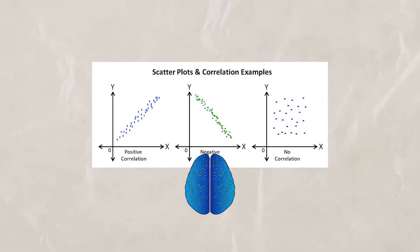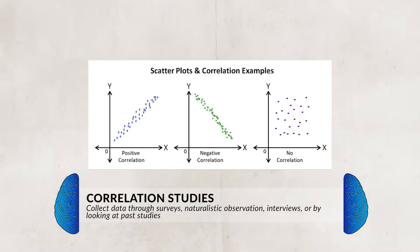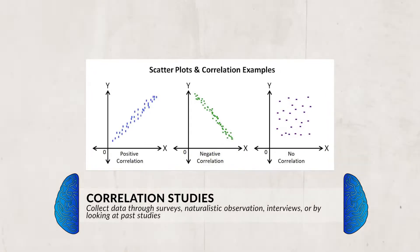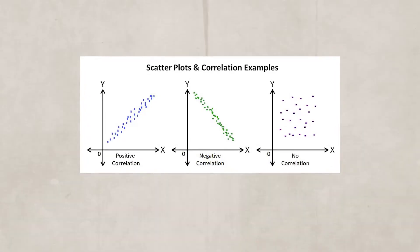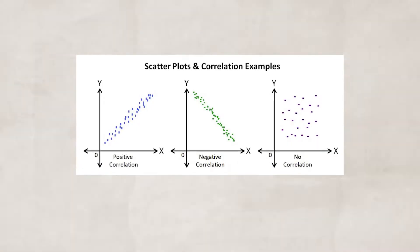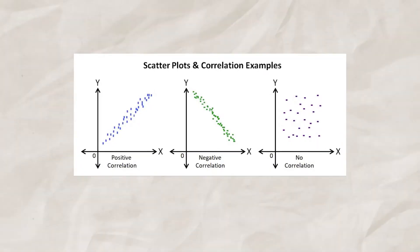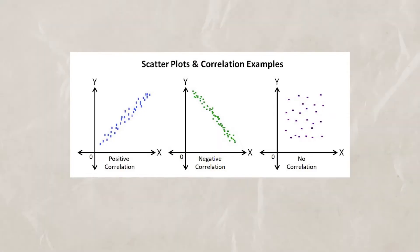One last type of study to mention is the correlational study, which we briefly discussed in our last video. Like quasi experiments, correlational studies do not show cause and effect — only controlled experiments can do that. Correlational studies collect data through surveys, naturalistic observations, interviews, or past studies, and researchers seek information on the relationship between two variables. The data is plotted on a scatter plot with one variable on the x-axis and the other on the y-axis. We'll go more in depth into negative and positive correlations in our unit 1, topic 5 video.